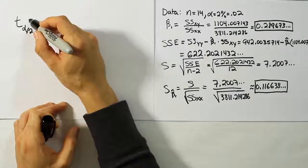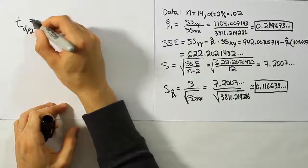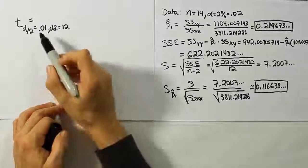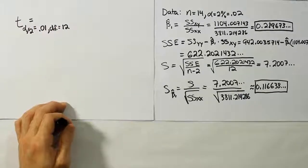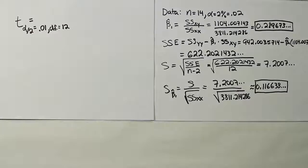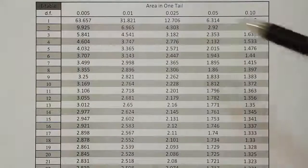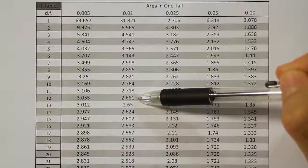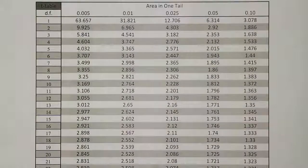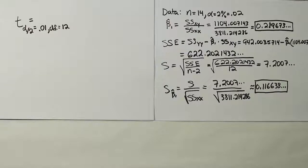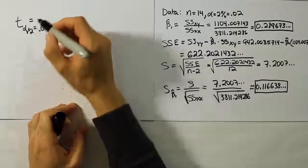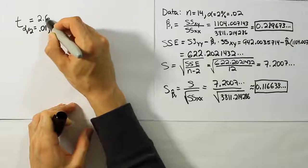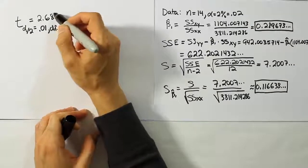Now we're going to go look that up and determine what our table value is. So let's go to the T table, look in the 0.01 column, down to degrees of freedom 12, and see what value we find. We're looking for 0.01 in one tail with 12 degrees of freedom, and we find the answer 2.681. So we found the answer 2.681 for our critical table value.